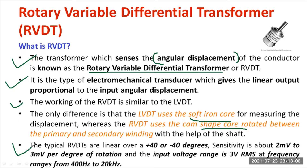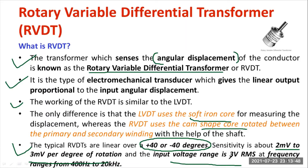Let us understand the specifications of RVDT. RVDTs are mainly used for measurement of angular displacement and they give a linear range over the duration of plus and minus 40 degrees. The sensitivity is 2 millivolts to 3 millivolts per degree of rotation. The input voltage range is 3 volts RMS. The frequency range is in the high frequency range of 400 hertz to 20 kilohertz.